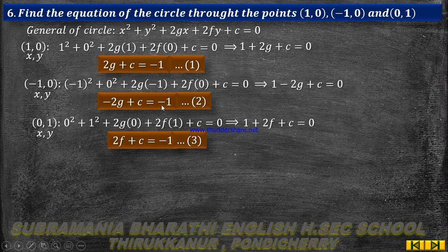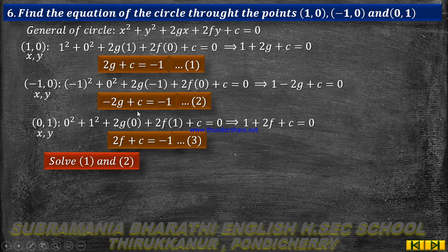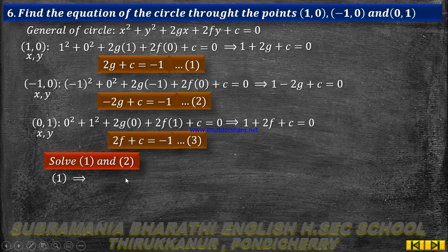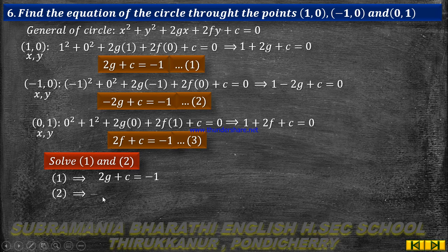Solving equations 1 and 2: equation 1 is 2g plus c equal to minus 1, and equation 2 is minus 2g plus c equal to minus 1.